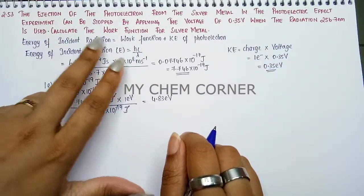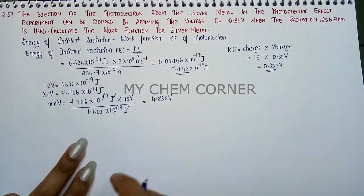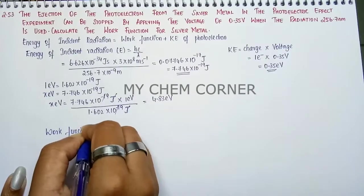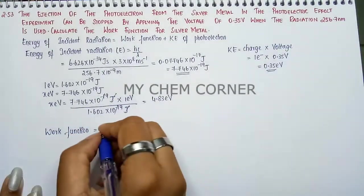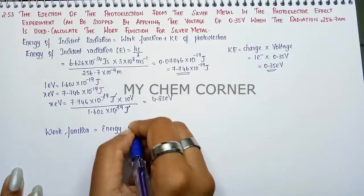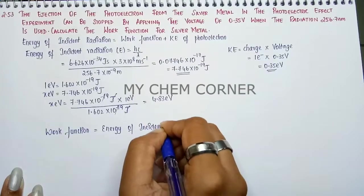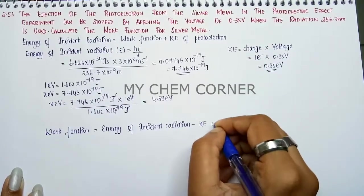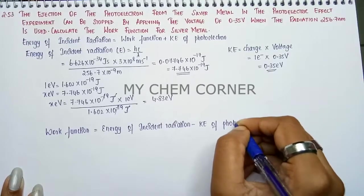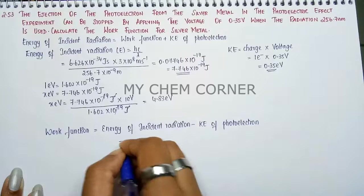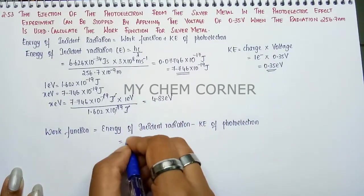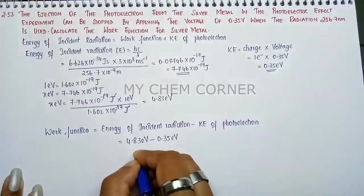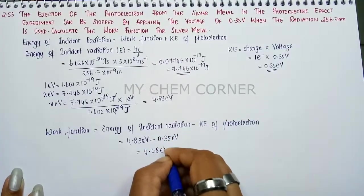Now we know the energy of incident radiation and the kinetic energy, so we can find the work function. Work function equals energy of incident radiation minus kinetic energy of photoelectron. That is 4.83 electron volt minus 0.35 electron volt, which equals 4.48 electron volt. That is the work function for silver metal.